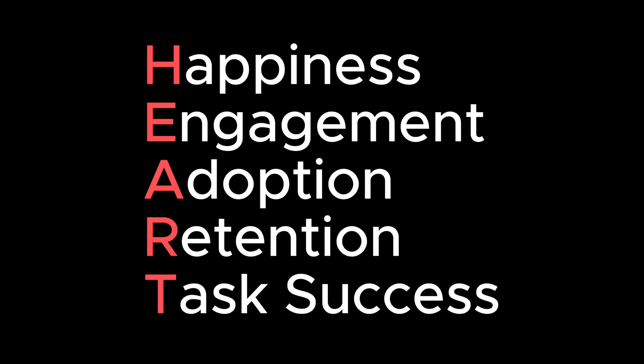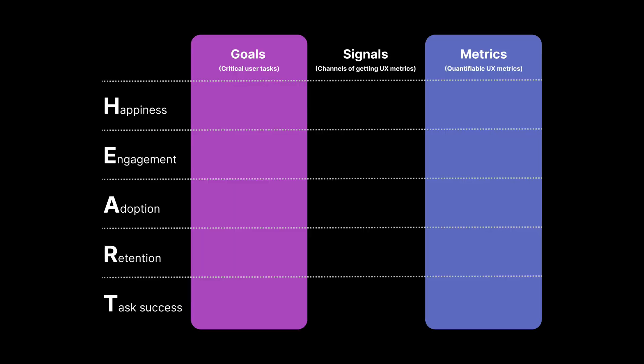HART is a framework created by Google that organizes metrics into five distinct categories: Happiness, Engagement, Adoption, Retention, and Task Success. Each category has its own specific goals, signals, and metrics used to assess different aspects of user experience. Goals are aligned with your user's needs and your business objectives. Signals are about how success or failure can be identified by user behavior or attitudes. Metrics are quantifiable user experience measures you can use to measure experience.